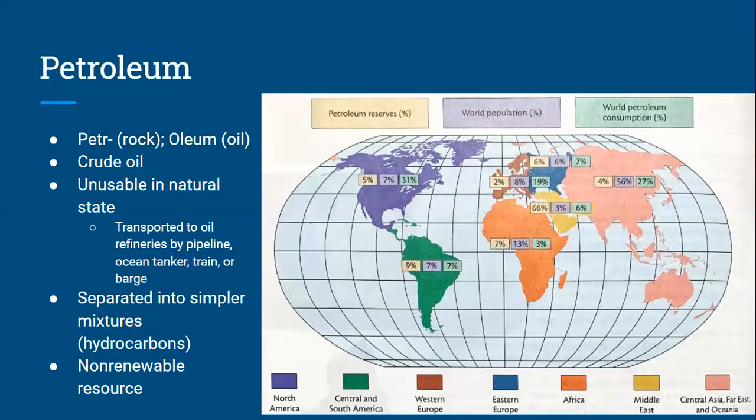To the right, there's a graph showing that. The lightest color to the left shows the percentage that region has of all the petroleum reserves. In the middle, the percentage tells us the world population percentage — of all the people in the world, what percentage live in that region? And last, it tells us what percentage of world petroleum consumption is from that region. So take a look at that map now.